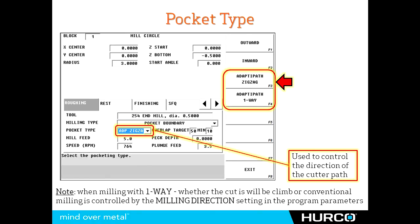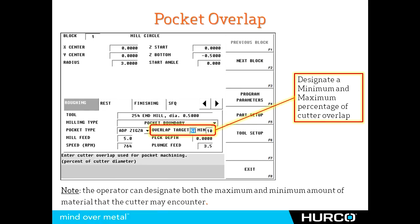The second setting is the one-way: it's going to climb mill, pick up, reposition, climb mill, pick up, reposition, and so on. We select which one we want by pulling down the pull-down menu for pocket type. That then gives us two other settings — target overlap, which is the amount of material, the max that we would like this tool to ever engage expressed as a percentage of the diameter of the tool, and a minimum — the least amount we want this tool to engage so it's never just moving around without any cutting productivity.